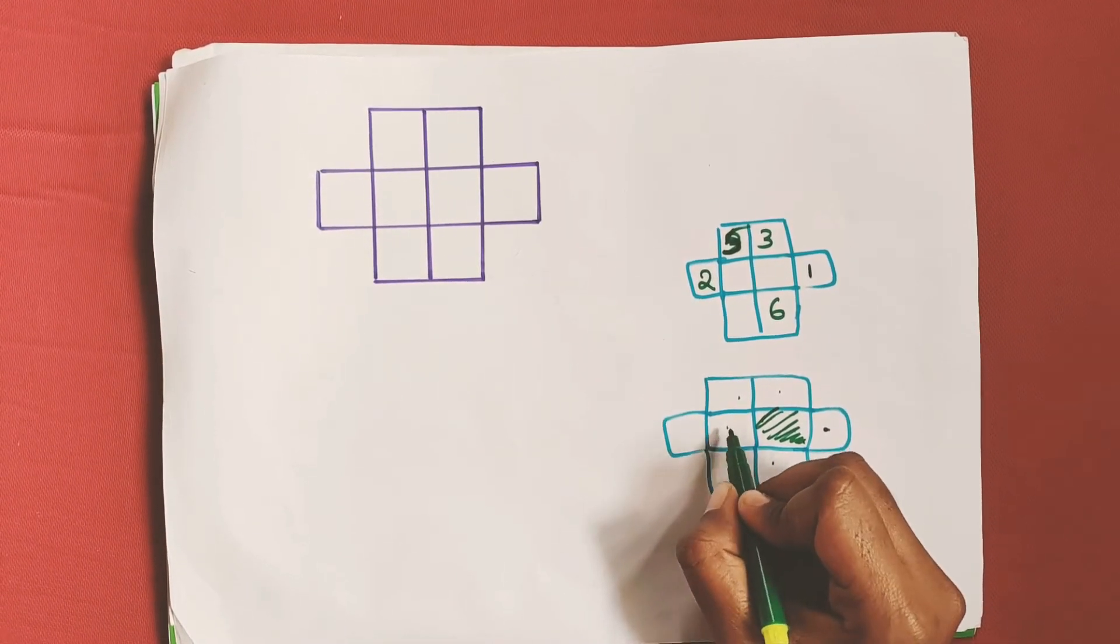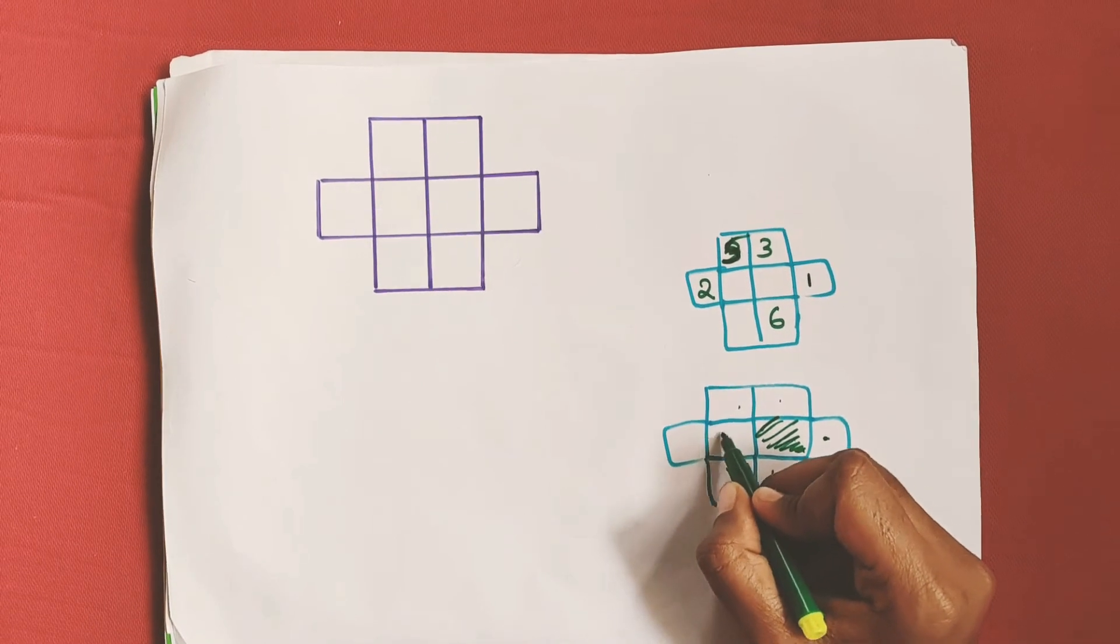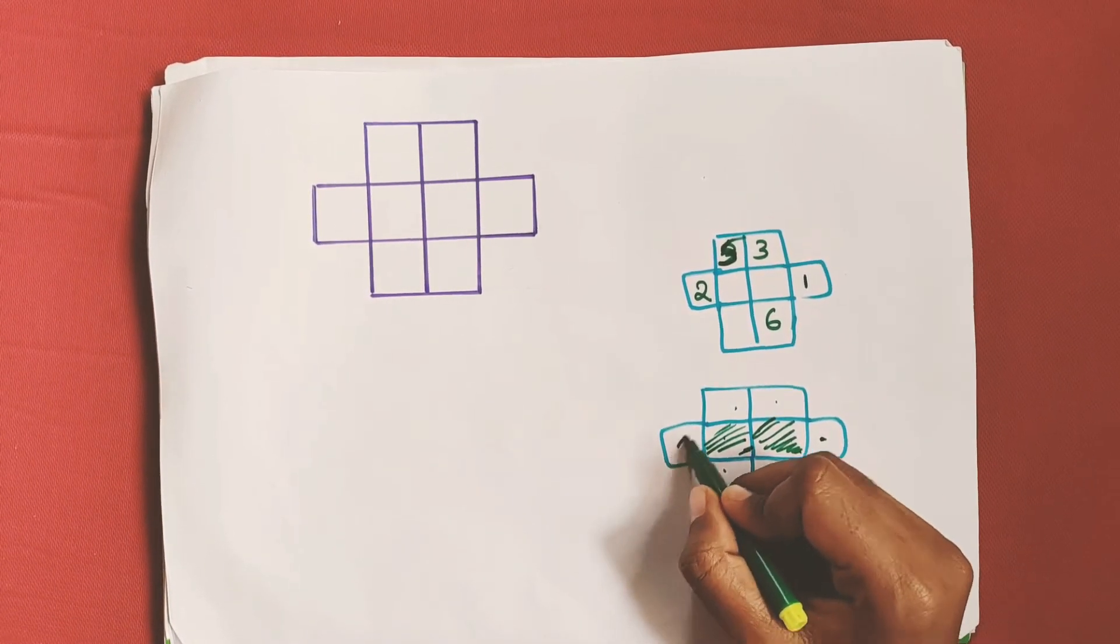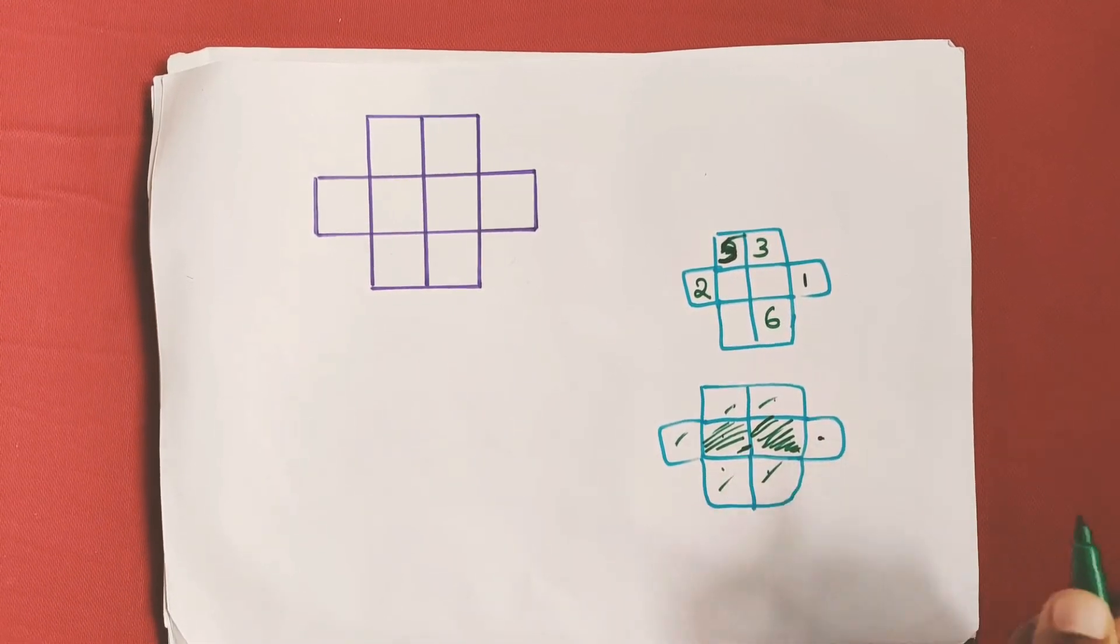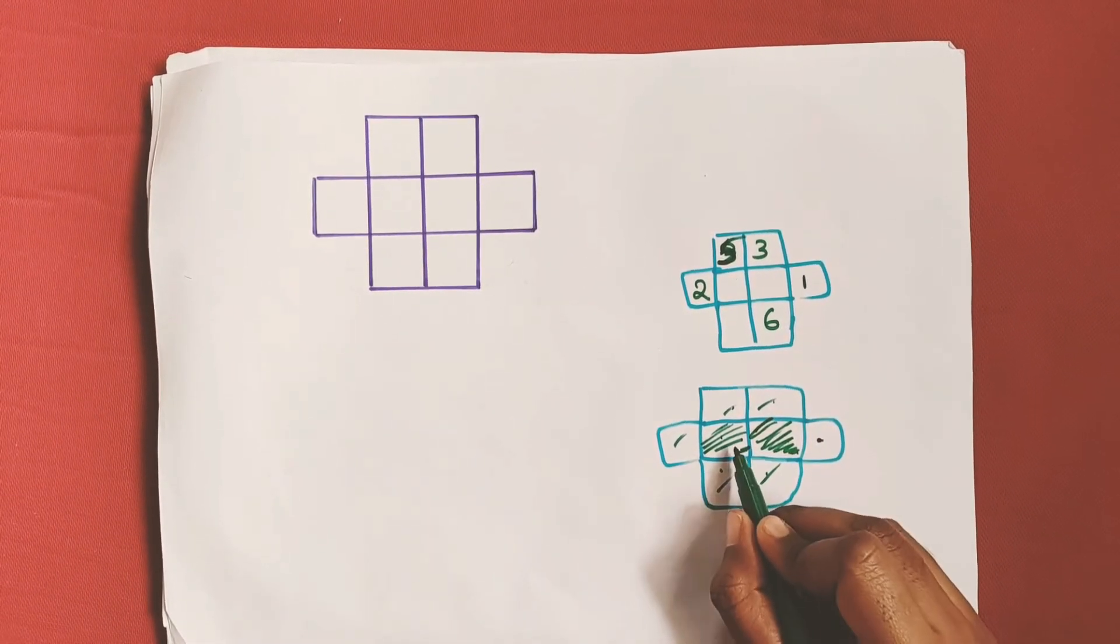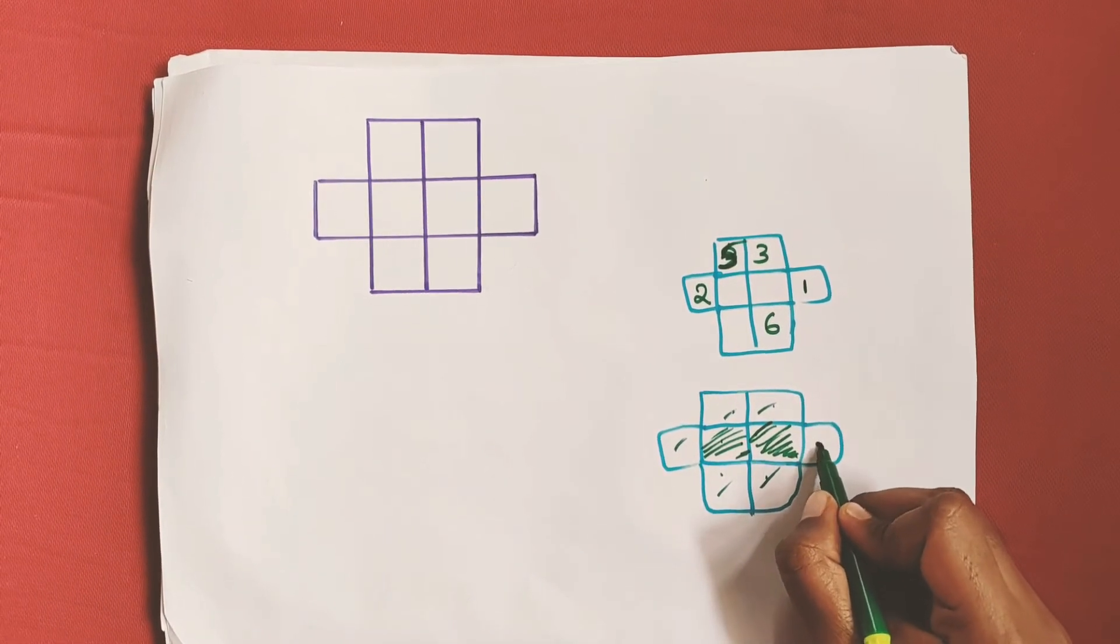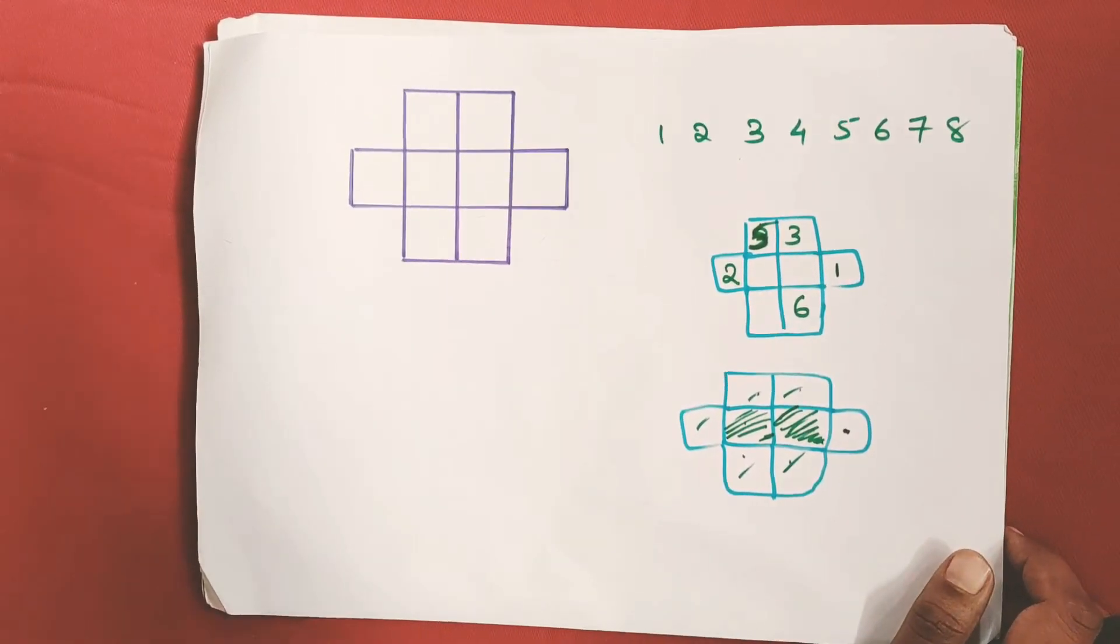Similarly, if I place any number in this box, all these boxes will be excluded, and I can place the adjacent number here. Now look at the numbers from 1 to 8 carefully.